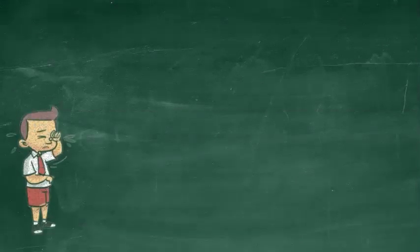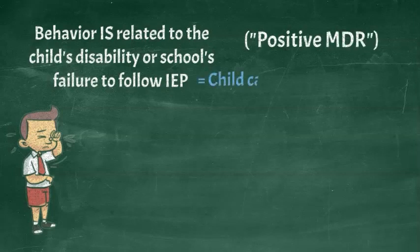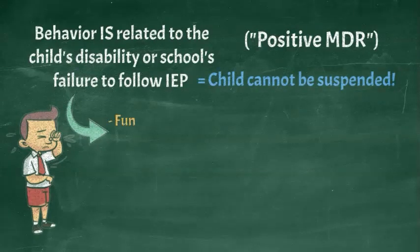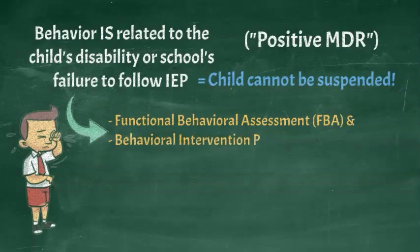If the behavior is related to the child's disability or the school's failure to implement the child's IEP, the child cannot be suspended and must be returned to their previous placement. They are also entitled to an Evidence-Based Functional Behavioral Assessment, known as an FBA, and Behavioral Intervention Plan, known as a BIP, if they don't already have one.